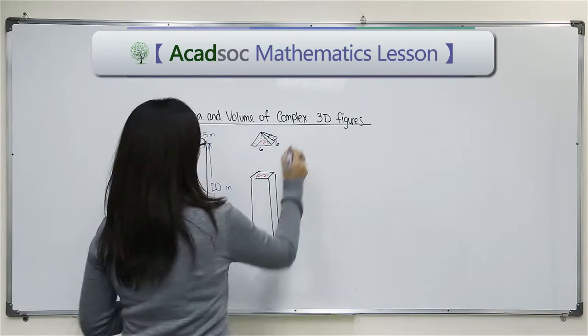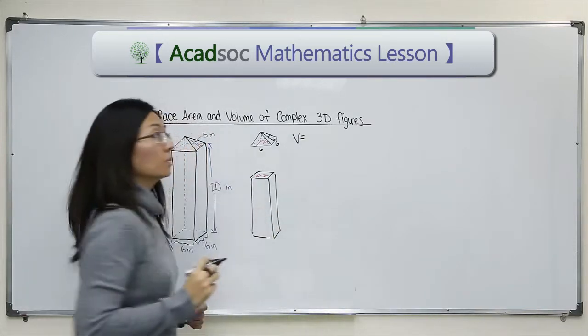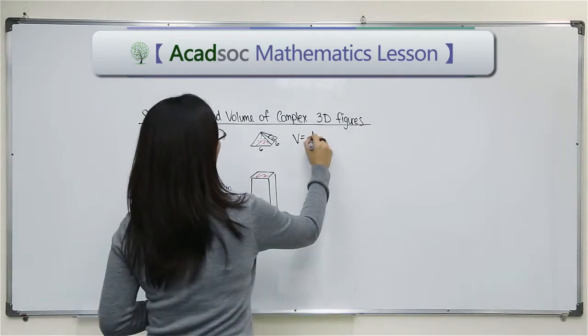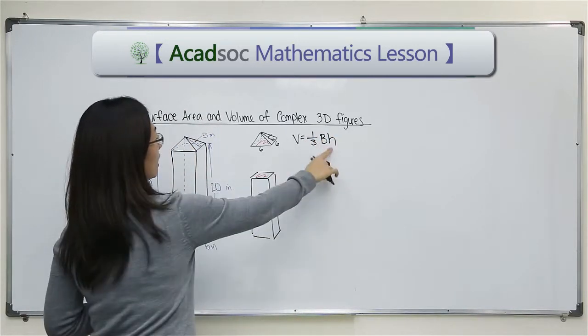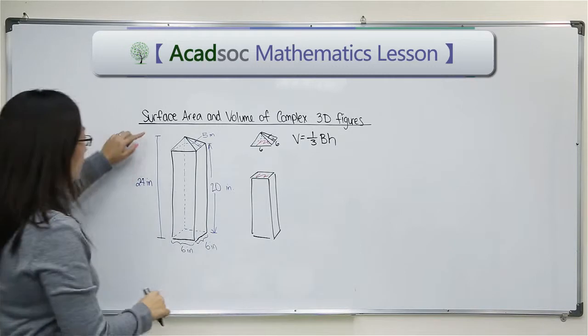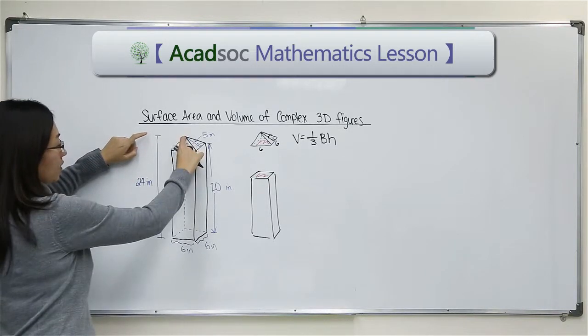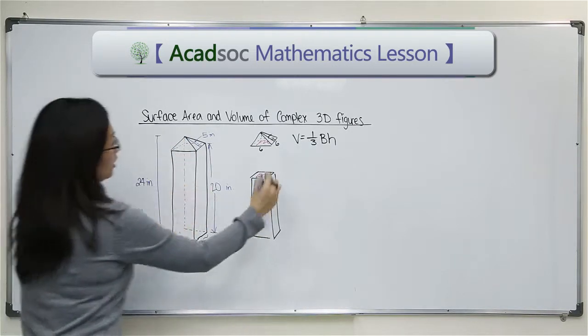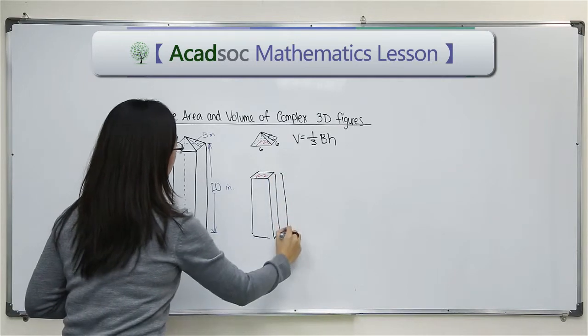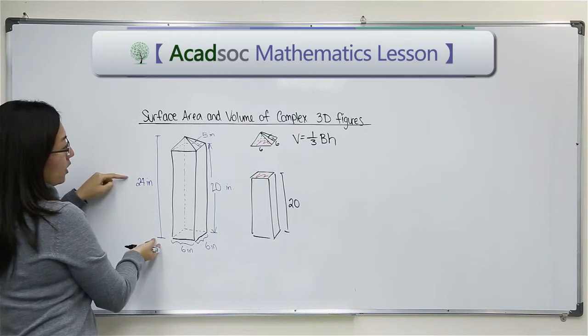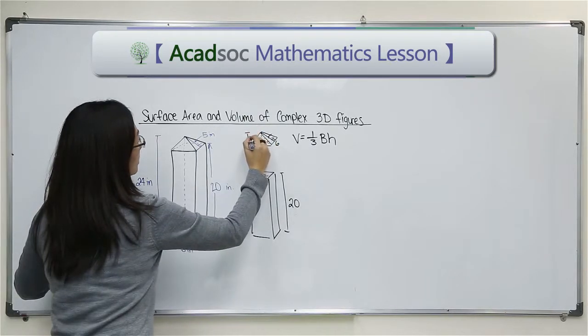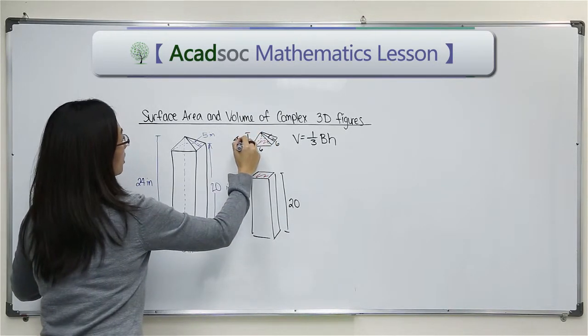Now to find the volume of a pyramid, the formula is one-third times the area of the base times height. I need to have the height of this pyramid. Now if you look, I don't have the height of this pyramid, but I do know the height of this prism is 20 inches and the total height of this monument is 24.4, meaning the height of this pyramid would be 4 inches.